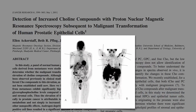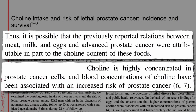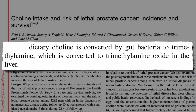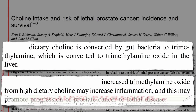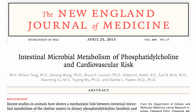But why may dietary choline increase the risk of lethal prostate cancer? It may be the TMAO — trimethylamine N-oxide. The Harvard researchers speculated that the TMAO from high dietary choline intake may increase inflammation and this may promote progression of prostate cancer to lethal disease.